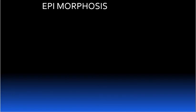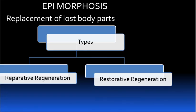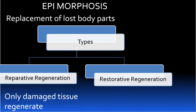Epimorphosis means the replacement of lost body parts. It has two types: reparative regeneration and restorative regeneration. Reparative regeneration means only certain damaged tissues regenerate. Restorative regeneration means several severed body parts develop back.